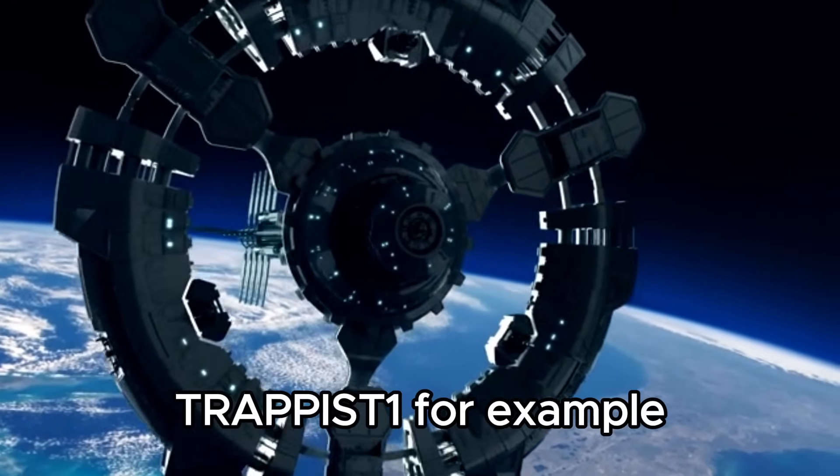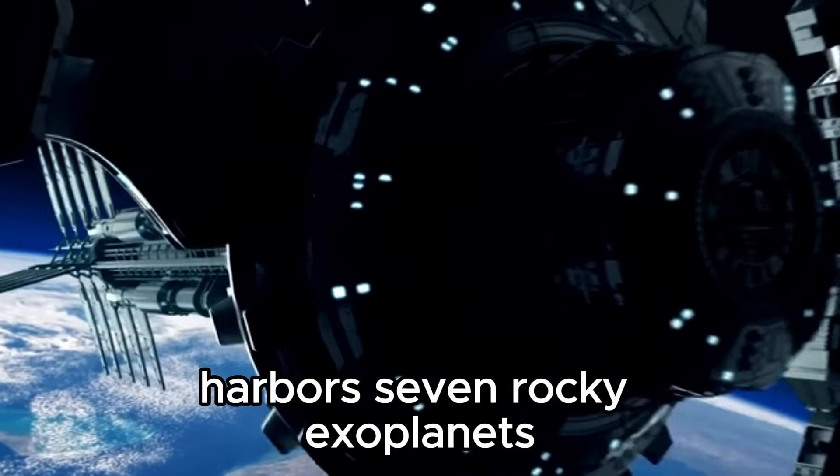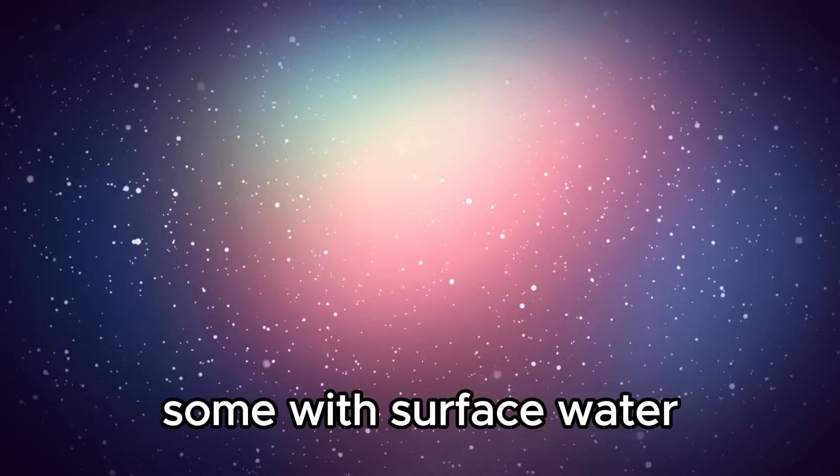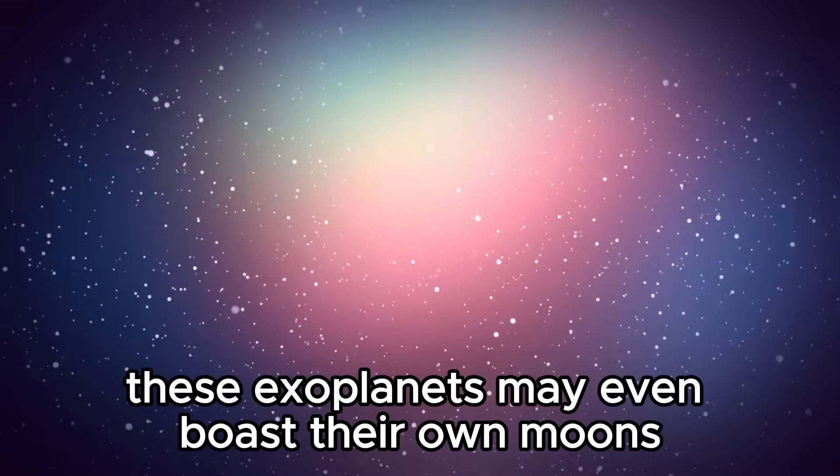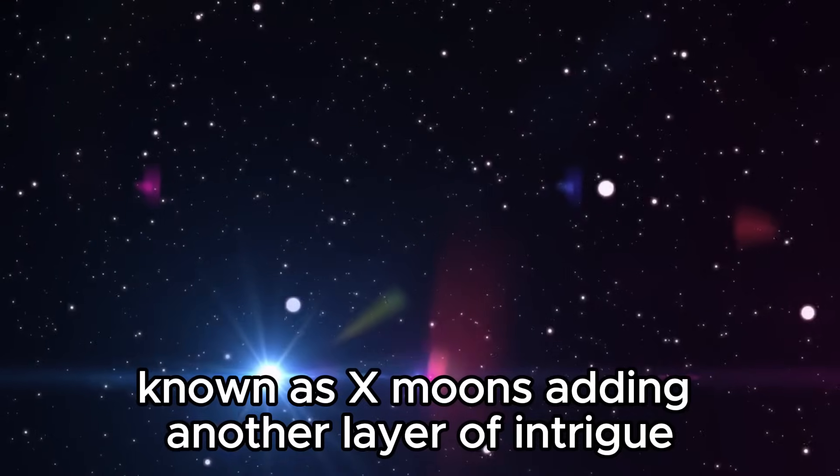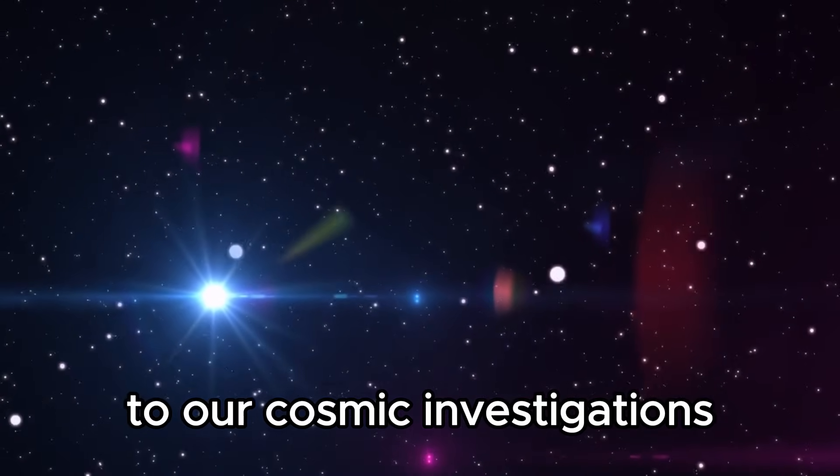Trappist-1, for example, harbors seven rocky exoplanets, some with surface water. These exoplanets may even boast their own moons, known as exomoons, adding another layer of intrigue to our cosmic investigations.